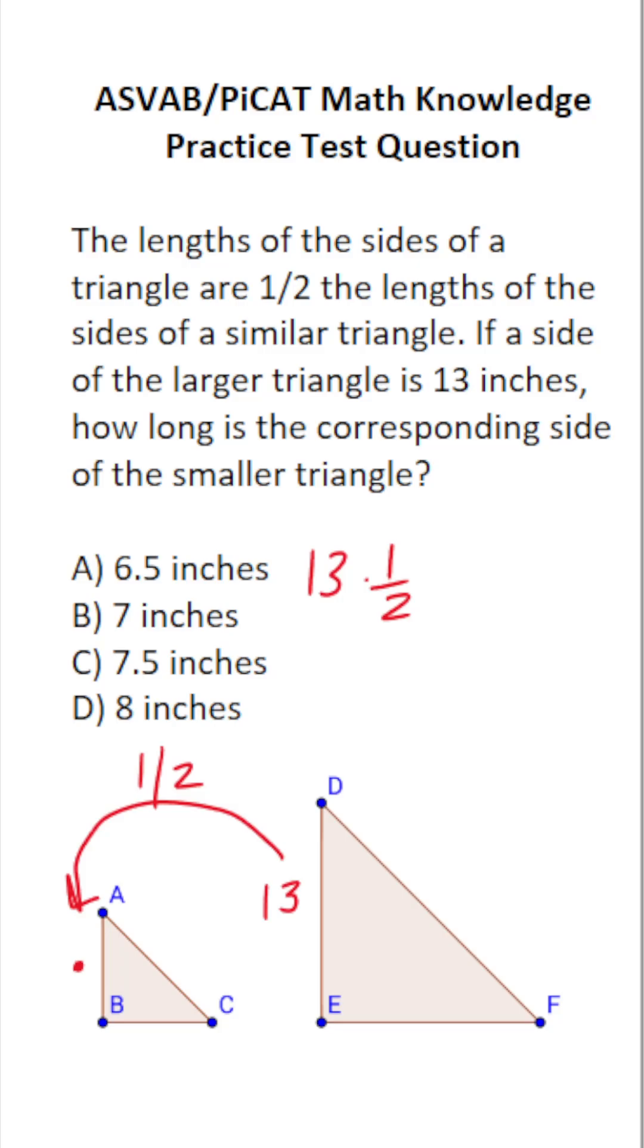If you can't do that mentally, you could always do it the old fashioned way. You could write 13 as a fraction by placing it over one and multiply straight across. This becomes 13 times one, which is 13. One times two is two.